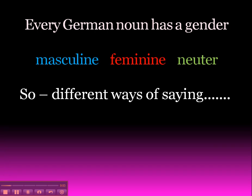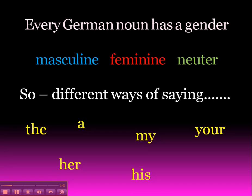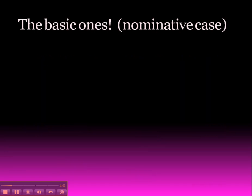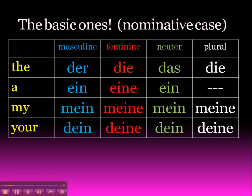So what does this mean? It means that there are different ways of saying words like the, a, my, your, her, his, and so on. So the basic ones look like this and you'll recognise these hopefully. The ways of saying 'the' are der, die, and das, and the plural die. For 'a': ein, eine, ein, and so on.